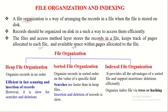There are three file organizations: heap file organization, sorted file organization, and indexed file organization. In heap file organization, records are organized in a data file with no order — they are arranged in the order in which they were entered into the table.